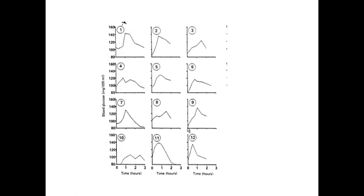Let's look at this data. These data are measured on 12 different patients. Each graph indicates change in blood glucose measured over time. The x-axis is time in hours. For example, this graph shows change in blood glucose over hours for subject 1. Let's consider what is the most proper summary measure if you were to collapse these repeatedly measured observations into one number per patient.